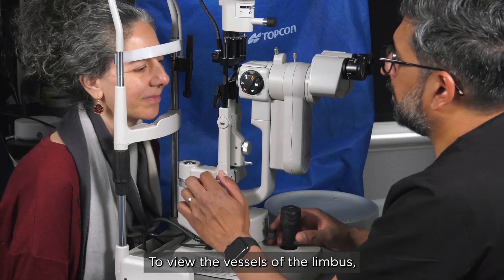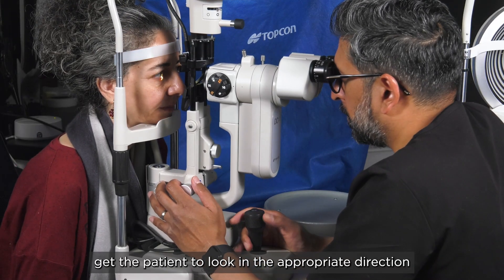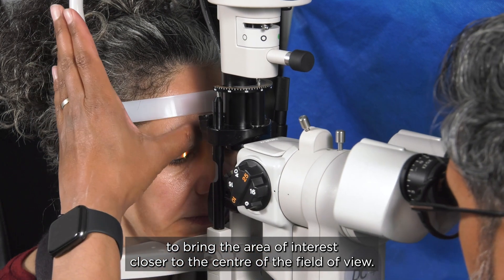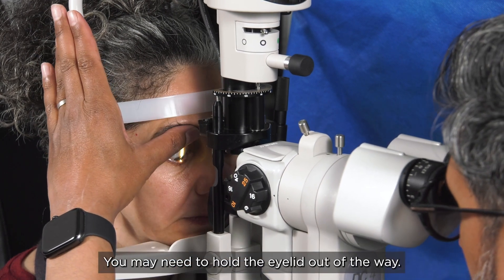To view the vessels at the limbus get the patient to look in the appropriate direction to bring the area of interest closer to the centre of the field of view. You may need to hold the eyelid out of the way.